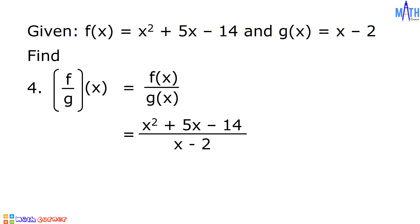To simplify this, let us factor the numerator. The numerator x squared plus 5x minus 14 is a quadratic trinomial where a is equal to 1, b is equal to 5, and c is negative 14. Since a is equal to 1, let us find factors of c, which is negative 14.